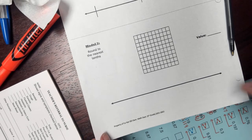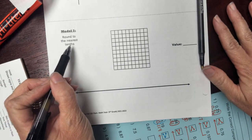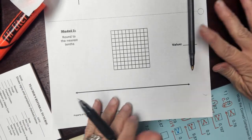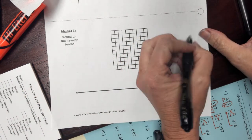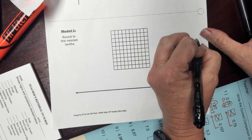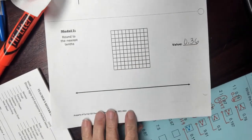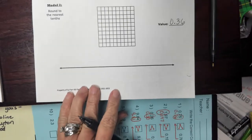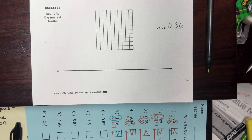All right, so for Model 2, it says that we're going to round to the nearest tenth. In the slide, it said that we were going to round the value 36 hundredths. So if you don't have that written on your paper, I'm going to invite you to write it right now. 36 hundredths.